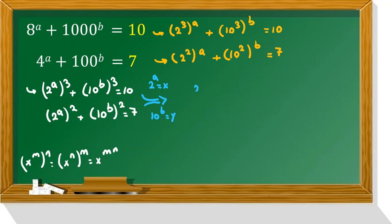And then we can say x cubed plus y cubed equal to 10, and x squared plus y squared equal to 7. For solving this, we use changing variable.